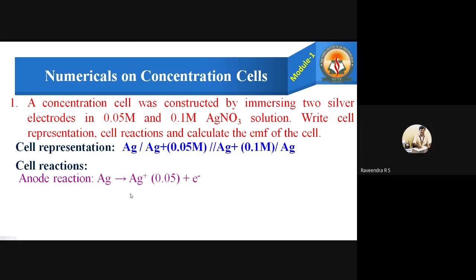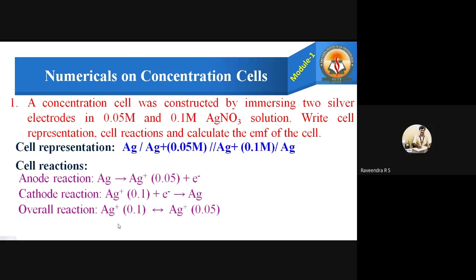The half-cell reactions are as follows. The anode undergoes oxidation: Ag → Ag⁺ (0.05 M) + e⁻. The cathode undergoes reduction: Ag⁺ (0.1 M) + e⁻ → Ag. The overall cell reaction is: Ag⁺ (0.1 M) → Ag⁺ (0.05 M).